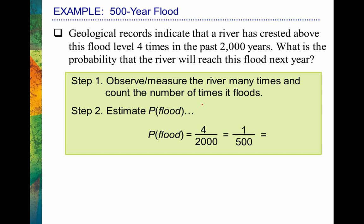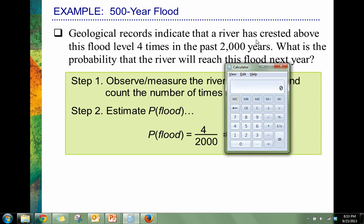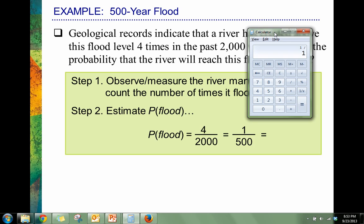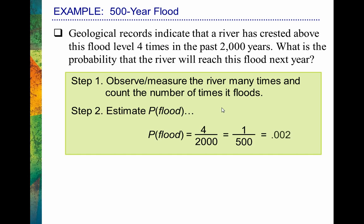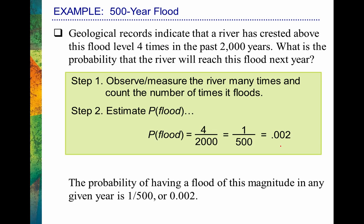We can pull out our calculator: 1 divided by 500 equals 0.002. Remember, 0.2 would be 2 times out of 10, 0.02 is 2 times out of 100, and 0.002 is 2 times out of 1,000. So we would only expect to find this about 2 times per 1,000. The probability of having a flood of this magnitude in any given year is about 1 out of 500, or 0.002. You see how we can quantify this based on past data — that's what the relative frequency perspective of probability is all about.